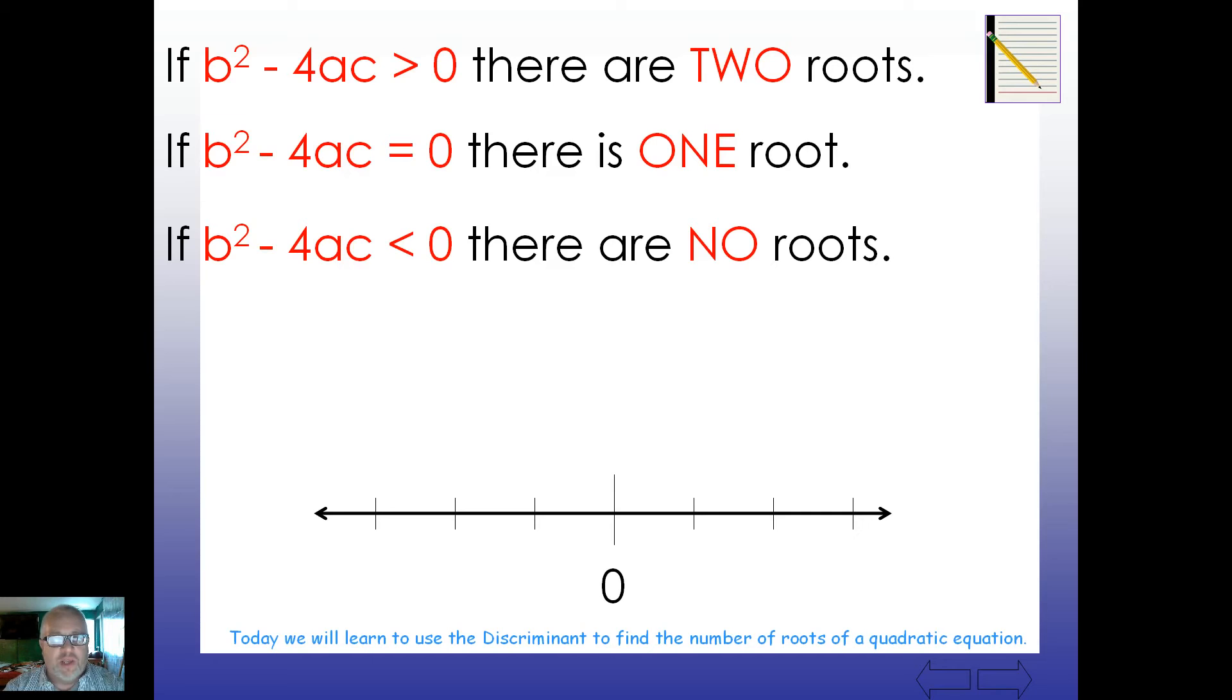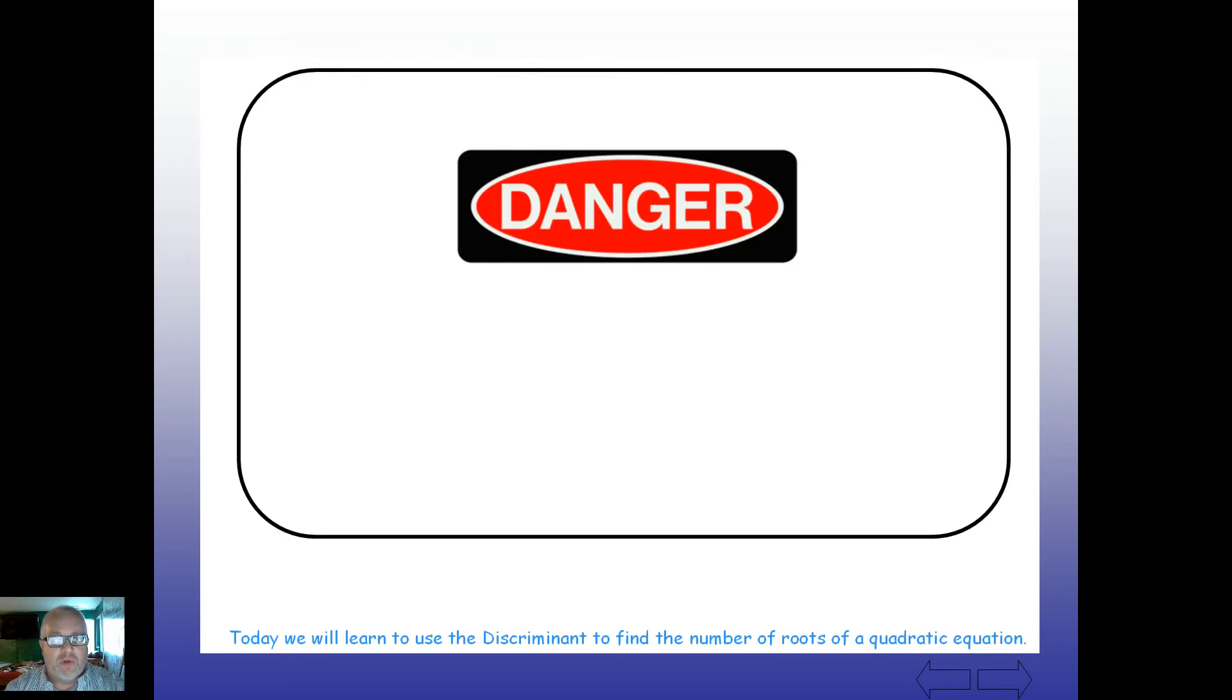So, again, let's look at it graphically here. Right in the center, there's one root. Notice that zero and one begin with the same similar shape there, zero and zero. The number one has the number zero. If there's one root, it has a zero there for the discriminant. b squared minus 4ac will equal zero. If it's positive, it has two roots. And if it's negative, it will have no roots. Negative, no roots.